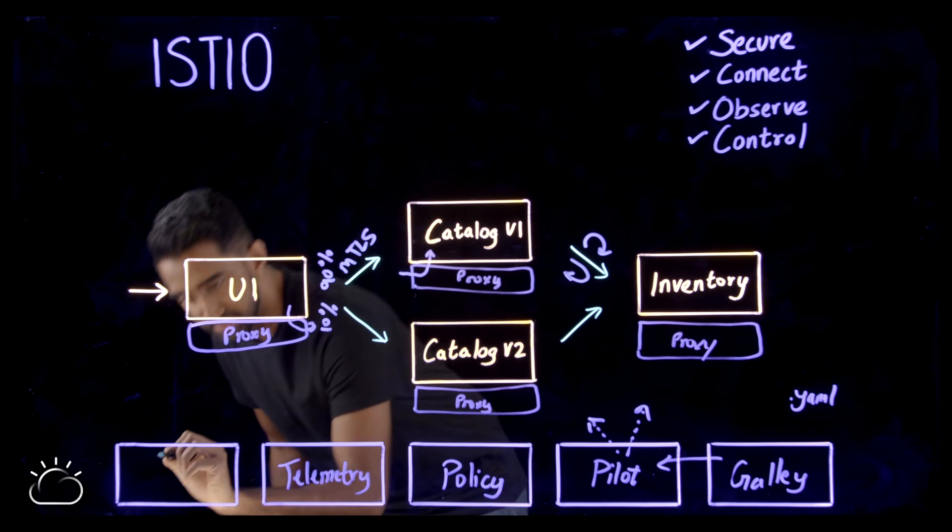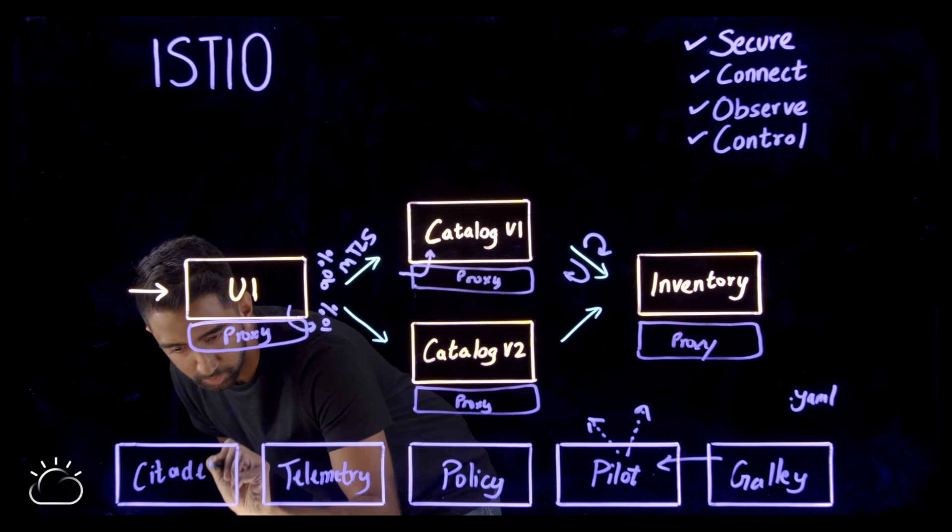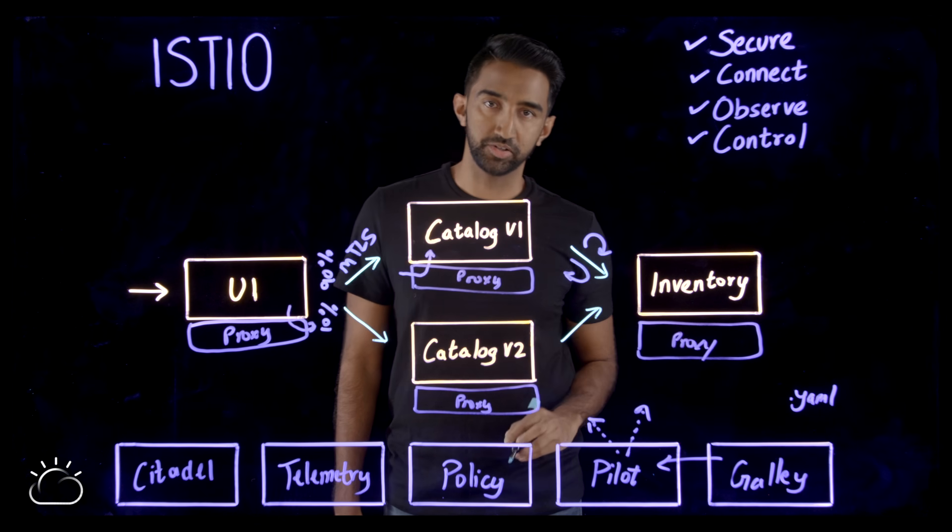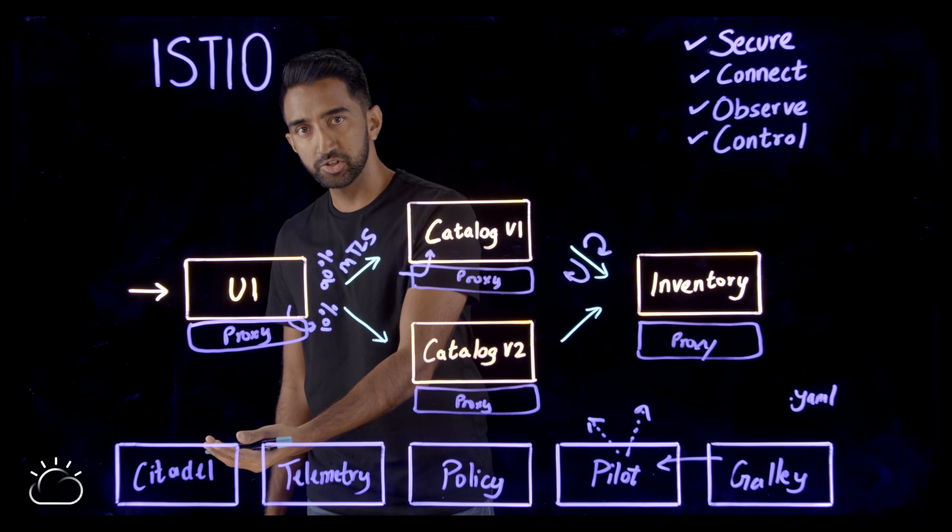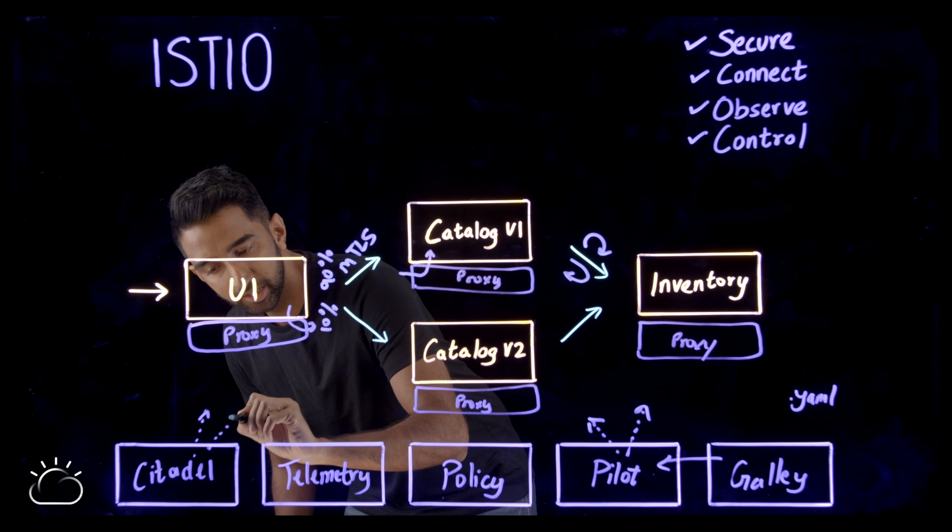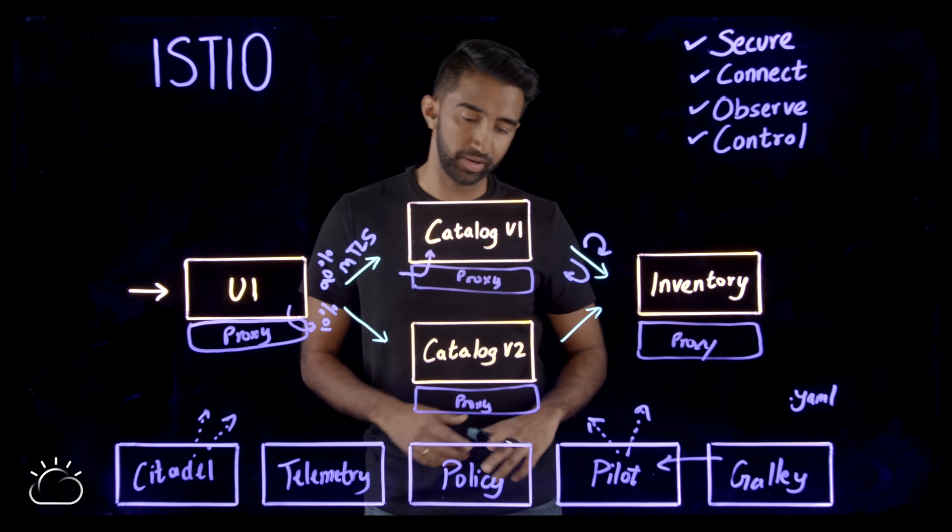And last but not least, there is Citadel. Citadel is responsible for providing strong identity to each one of the services in your system. It also generates certificates and rolls it out to each one of the proxies so that the proxies can do mutual TLS when they are talking to one another.